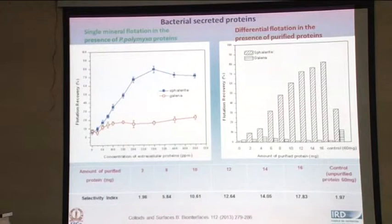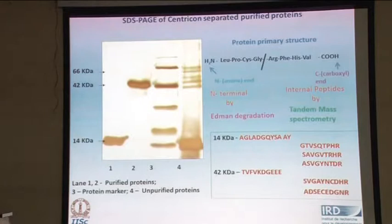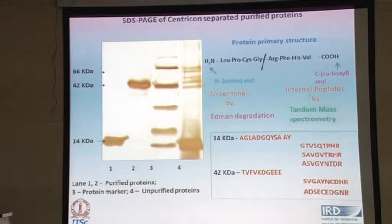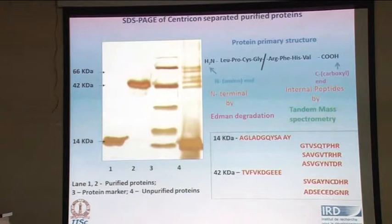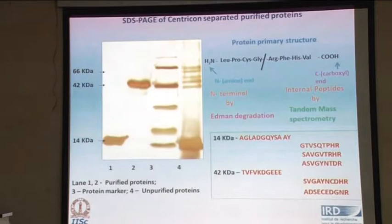To identify the proteins, you have to separate them on a column. We have developed a protocol using a mineral-based column. The first two lanes show the purified proteins, with enrichment of the 14 kDa and 46 kDa protein fractions. The third lane is the standard protein marker, and the last one is the unpurified proteins, which shows several bands.